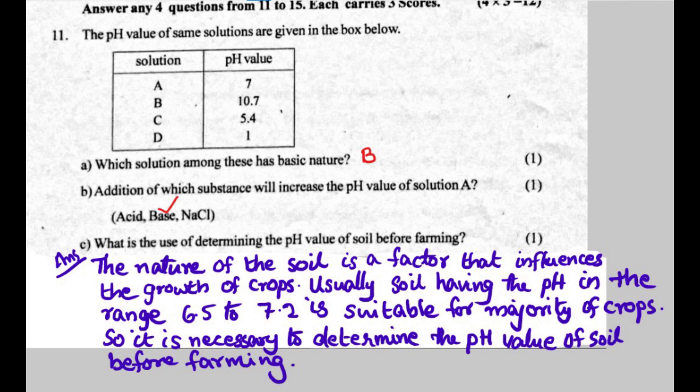B has pH 10.7, which is basic nature — alkaline nature. Addition of which substance will increase the pH value of solution A? Solution A is neutral (pH 7); adding an alkaline substance will increase its pH.